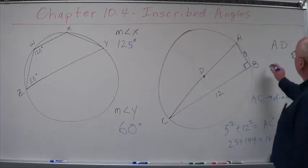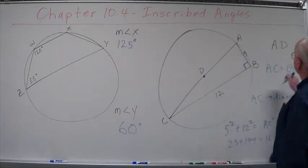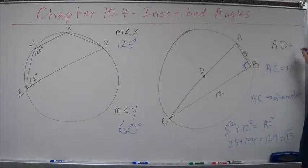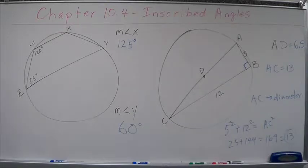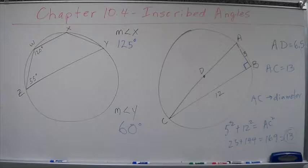Okay, so AC equals 13. Well, what's AD? Half. Divide that by half and you've got 6.5. So AD equals 6.5. Again, diameter intercepted by an inscribed angle creates a right triangle.